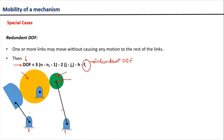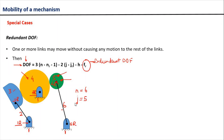First we calculate the total number of links: the fixed link is link 1, then link 2, link 3, link 4, link 5, and link 6, so the total number of links is equal to 6. Now counting the revolute pairs: 1R, 2R, 3R, 4R, 5R — total 5 revolute pairs. This mechanism also contains 2 higher pairs: 1H and 2H. So the number of higher pairs is equal to 2.